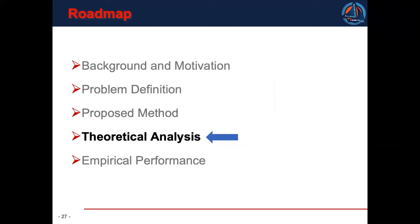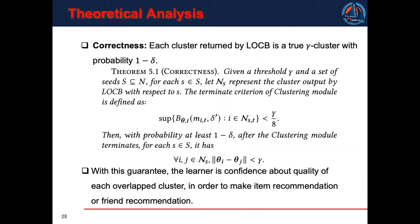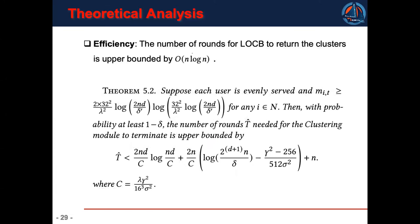The next part is the theoretical analysis. The first theorem we provide is about correctness. Each cluster returned by LOCB is a true gamma cluster with probability at least one minus delta. With this guarantee, the learner is confident about the quality of each overlapped cluster, so that the pulling module can make effective item recommendation or friend recommendation. The second theorem is about efficiency. The number of rounds for LOCB to return the clusters is bounded by this term, which is proportional to n log n, where n is the number of users. This shows LOCB is an efficient algorithm.